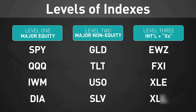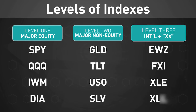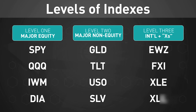Level two: your major non-equity players, like GLD (gold), TLT (bonds), USO (oil), and SLV (silver). Level three: international indexes or sector indexes, like EWZ (Brazil), FXI (China), and XLE, XLU, and a number of other XL indexes representing different sectors of the US economy.